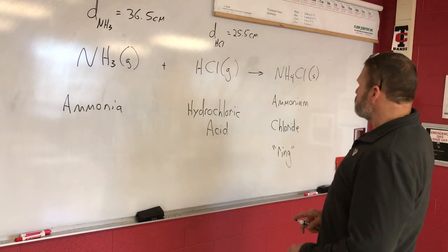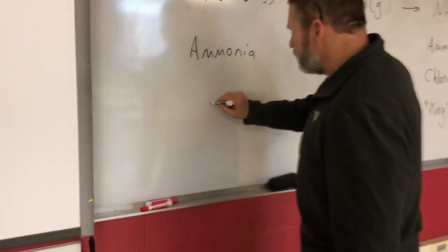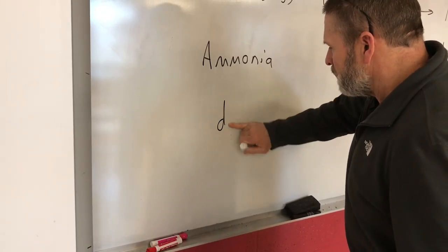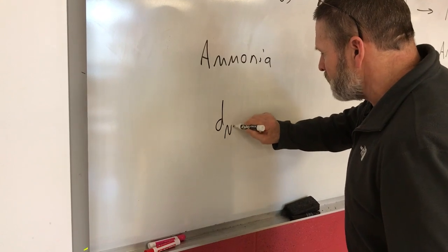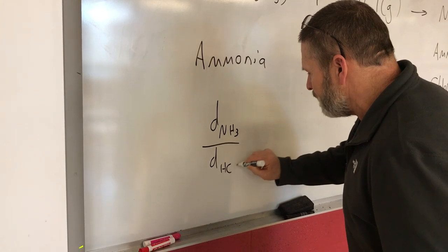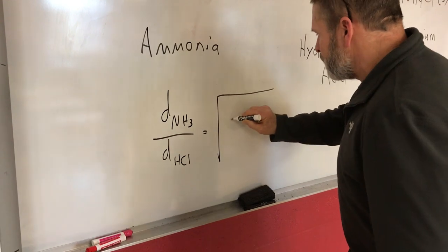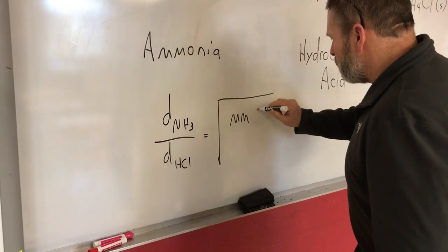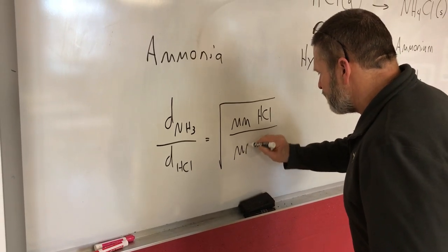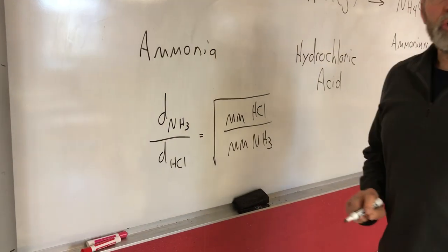Okay. So, if you think about Graham's Law, right, we could alter it a little bit. Okay. And I'll do this. I'll put distance of ammonia over distance of HCl should be equal to the square root of the molar mass of HCl over the molar mass of NH3.